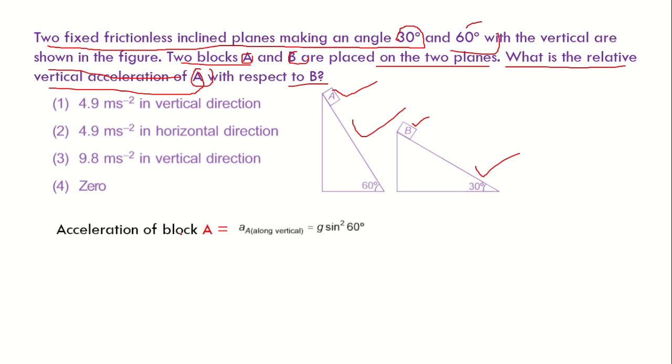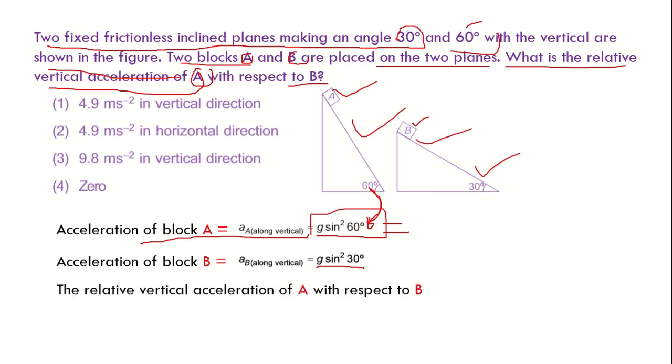For that, we know that acceleration of block A along vertical direction is given by g sine square theta. Here theta equals 60 degrees. Now we know that acceleration of block B along vertical direction is given by g sine square 30 degrees. The relative vertical acceleration of A with respect to B is given by the difference between the acceleration of A and B.